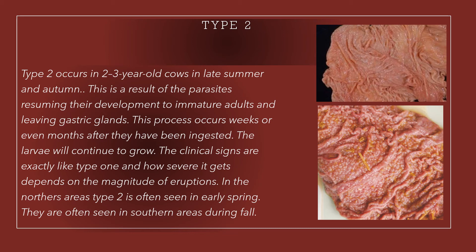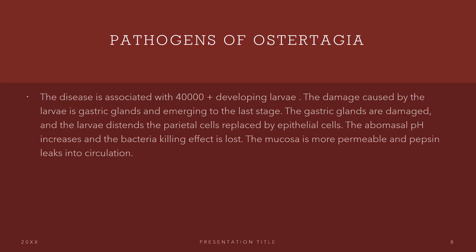The larvae will continue to grow. The clinical signs are exactly like Type 1, and how severe it gets depends on the magnitude of eruptions. In northern areas, Type 2 is often seen in early spring. In southern areas, they are seen during fall. Now let's talk about the pathogenesis of Ostertagia. This disease is associated with more than 40,000 developing larvae. The damage caused by the larvae is to the gastric glands as they emerge to the last stage. The gastric glands are damaged and distended. The parietal cells are replaced by epithelial cells. The abomasal pH increases and the bacteria-killing effect is completely lost. The mucosa is more permeable and pepsin leaks into circulation.